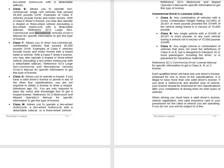Reference SC's Large Non-Commercial and Recreational Vehicles Driver's Manual for specific information to get a Class E license. Class F allows you to drive non-commercial combination vehicles that exceed 26,000 pounds GVW. Examples include trucks and motorhomes with a towed trailer or vehicle. With a Class F driver's license, you may also operate a moped or three-wheel vehicle, excluding a two-wheel motorcycle with a detachable sidecar. Reference SC's Large Non-Commercial and Recreational Vehicles Driver's Manual for Class F information. Class G allows you to operate a moped. Minimum age is 15. You are only required to pass the vision and knowledge test to get a moped license. Reference SC's Motorcycle and Moped Operator's Manual for specific information.